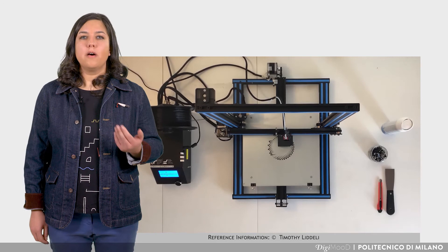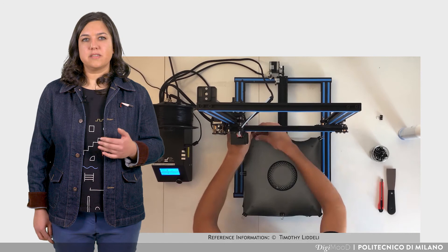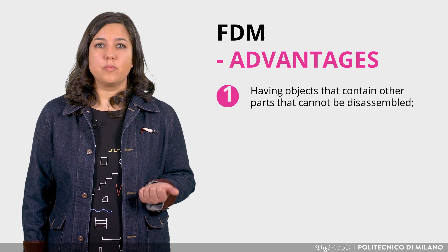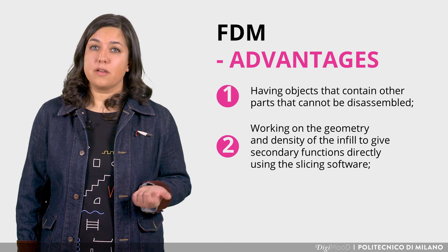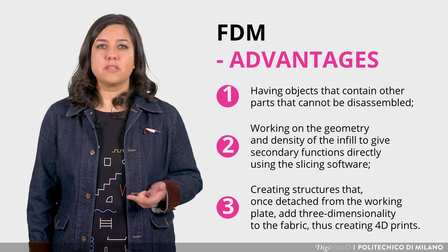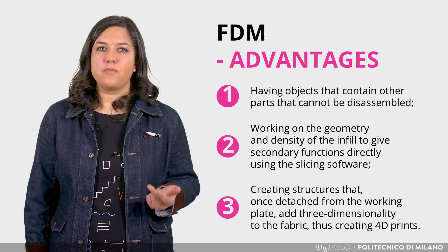In order to make inclusions of other components during the materialization phase, or to print directly on an existing substrate — for example through 3D printing on a textile bed — the only technology that can be used is FDM. There are many advantages to adopting this technique: having objects that contain other parts that cannot be disassembled, working on the geometry and density of the infill to give secondary functions using the slicing software, and creating structures that, once detached from the working plate, add three-dimensionality to the fabric, thus creating 4D prints.